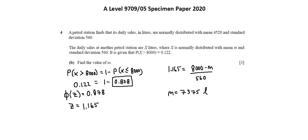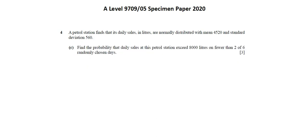Now, let's continue on to requirement C. Find the probability that daily sales at this petrol station exceed 8,000 liters on fewer than 2 of 6 randomly chosen days. Notice that we're working with the station that was described in requirement B, not the station described in requirement A.